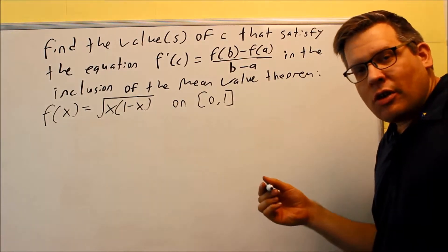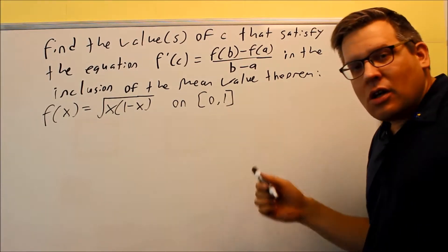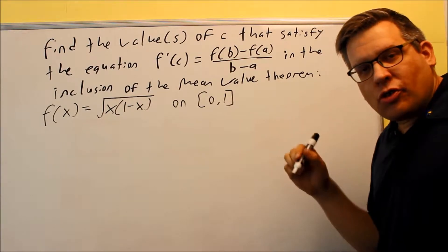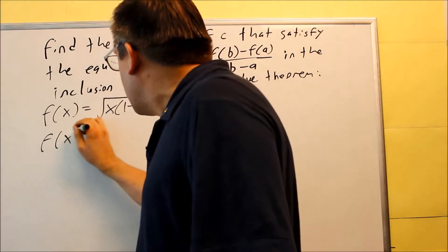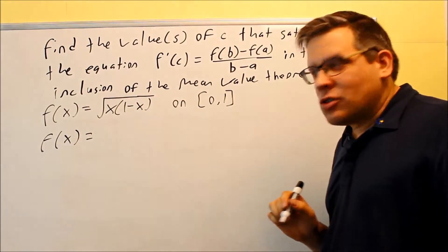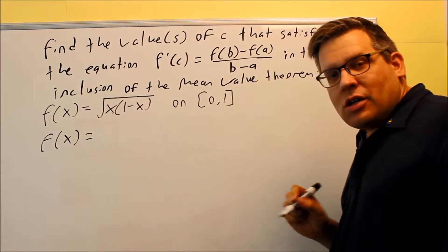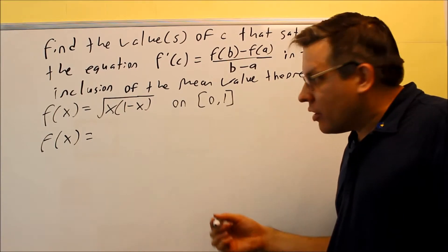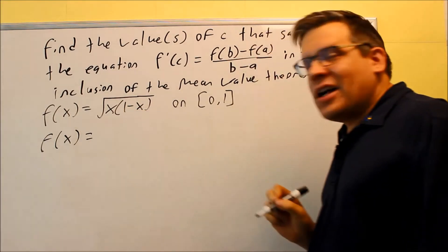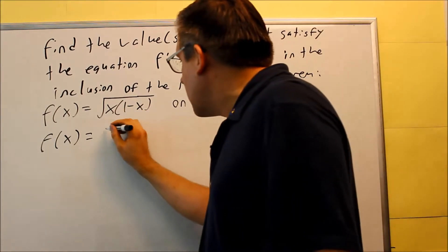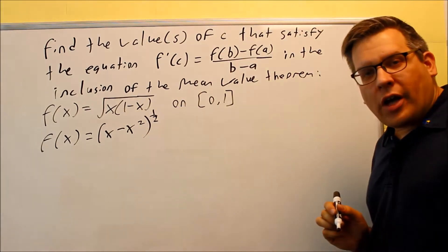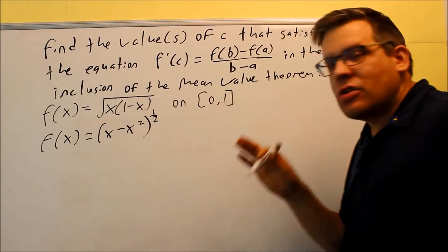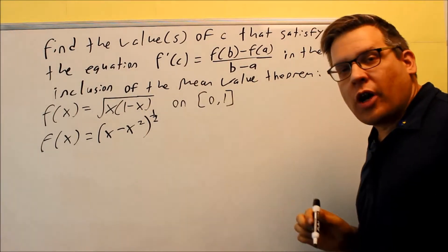The next thing we have to do is make sure that it's continuous on the open interval from 0 to 1 for the derivative. So let's do the derivative. Now before I jump into the derivative, what might make this easier to avoid doing a chain rule and a product rule together would be I'm just going to multiply the inside out. So I get x minus x squared, and then I'll write that to the 1 half power. I didn't do any derivative yet, but all I'm doing is rewriting it.